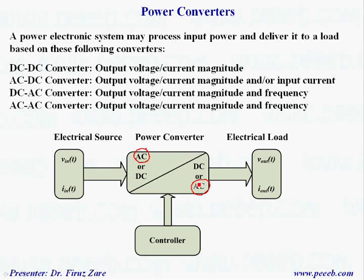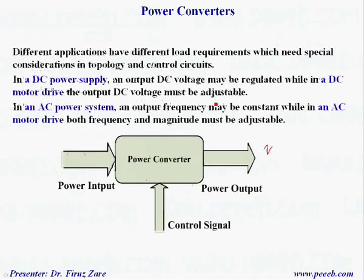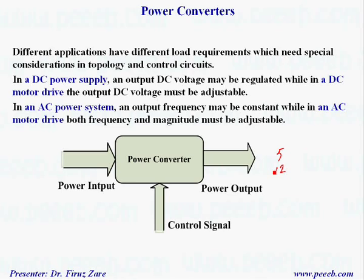Different applications have different load requirements, which need special consideration in topology and control circuits. For example, in a DC power supply where we generate DC voltage, normally we need regulated voltage at 5 volts or 12 volts depending on application — so the output voltage is almost constant. In another application, such as a DC motor drive, the output voltage should be adjustable, because for variable speed we need to change the DC voltage.